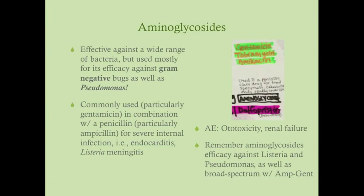Aminoglycosides are commonly used but rarely alone — exceptions are plague and tularemia. They are typically paired with a beta-lactam, most commonly ampicillin (ampicillin-gentamicin), especially in ICU settings or severe infections such as endocarditis. Aminoglycosides are also used for Listeria coverage, which is important in pneumonia in the very young or very old. They cover gram-negative bugs and also cover Pseudomonas.